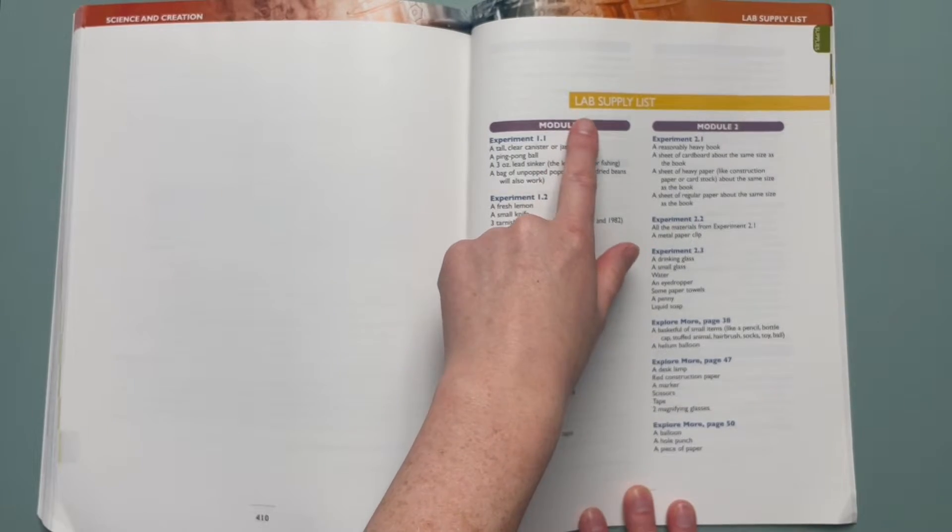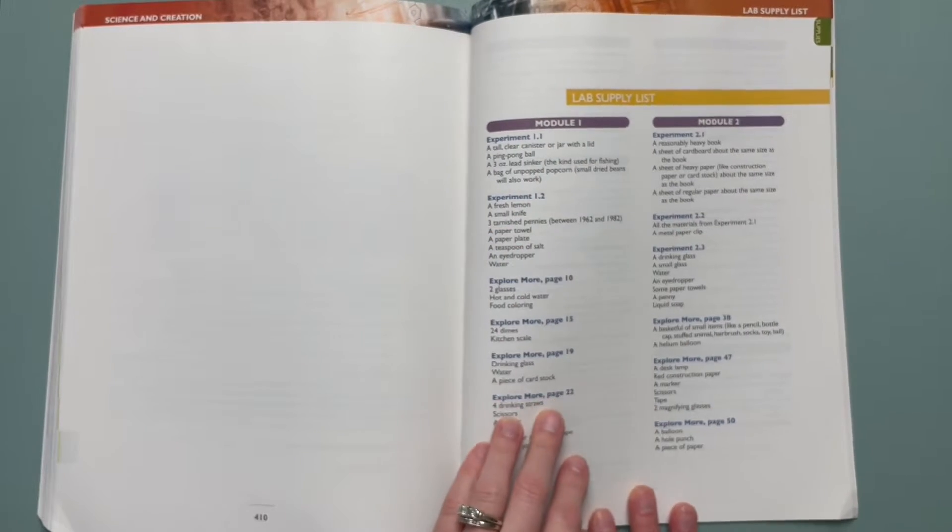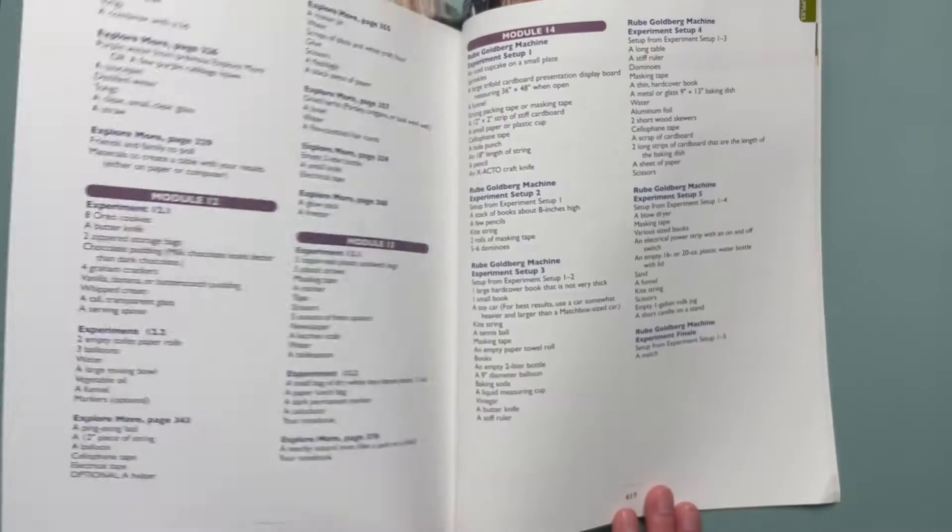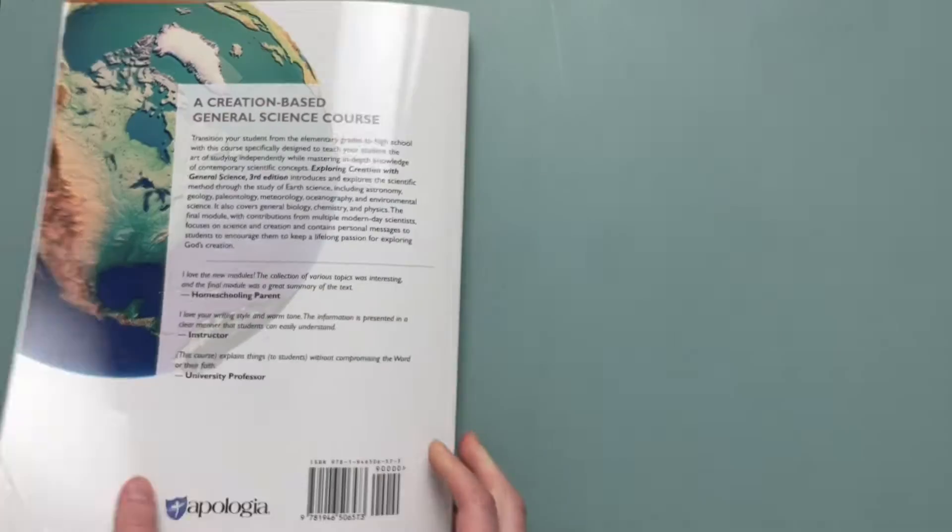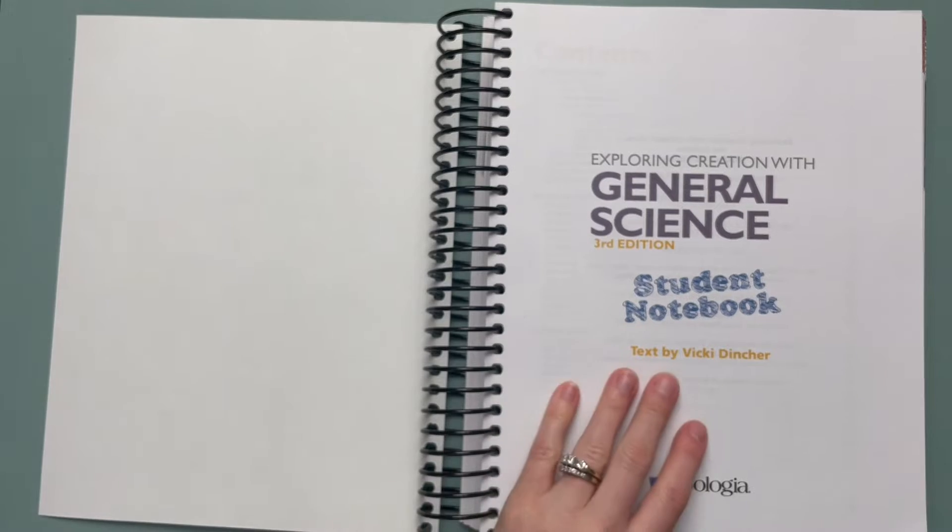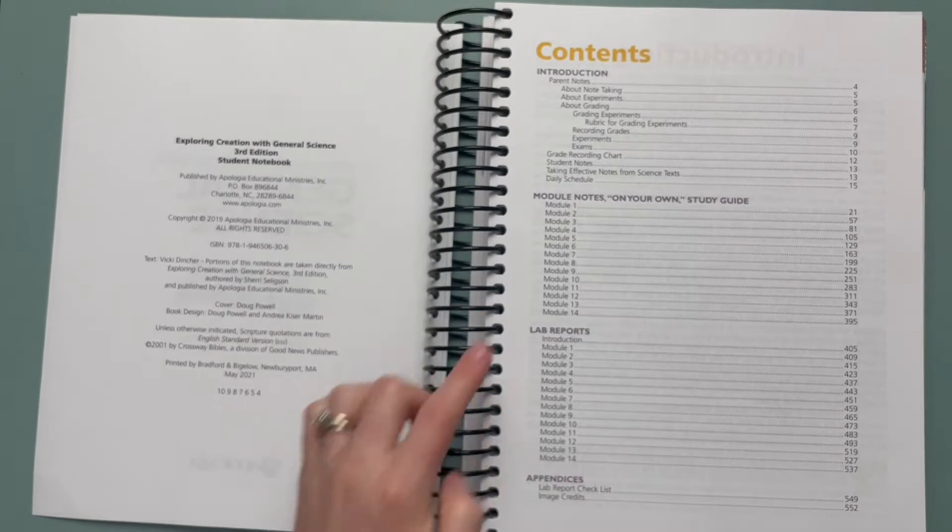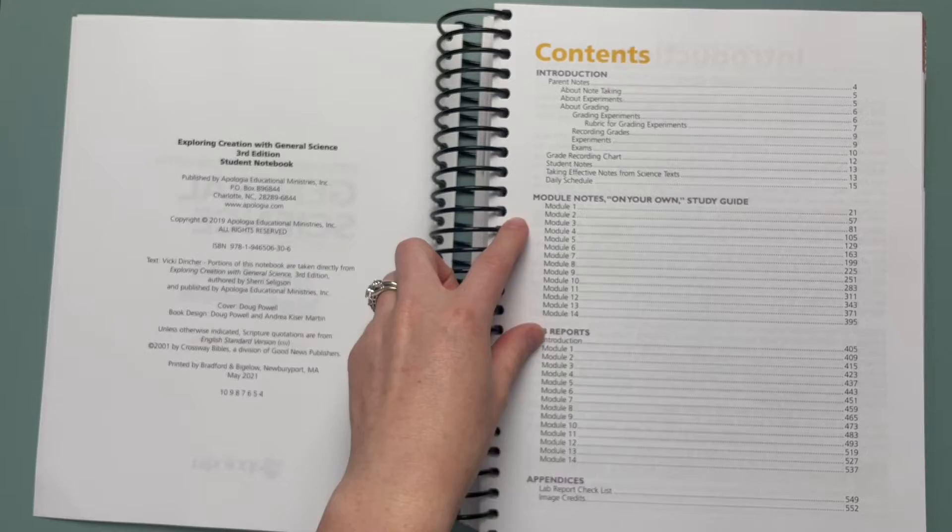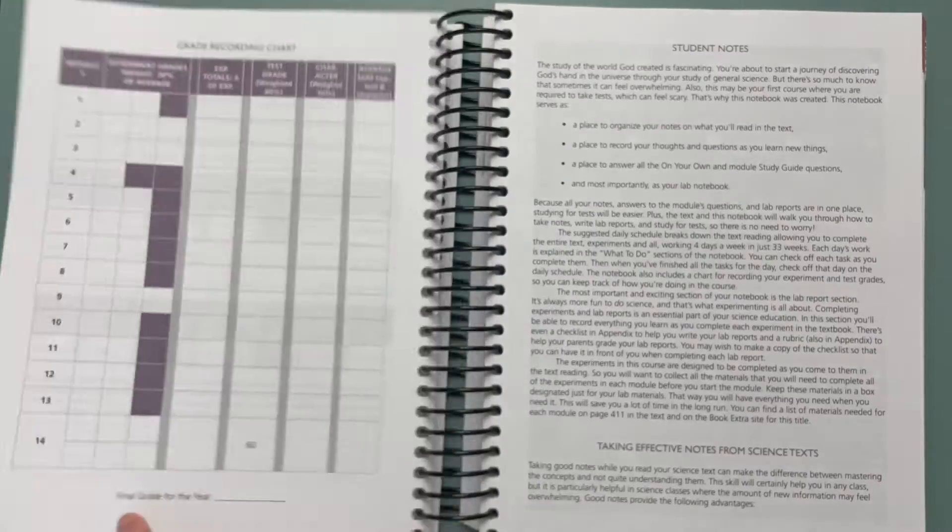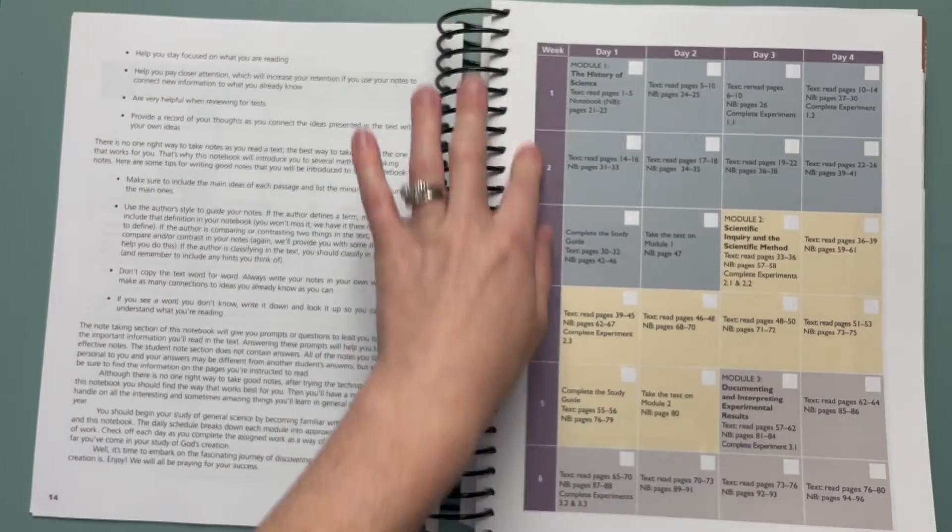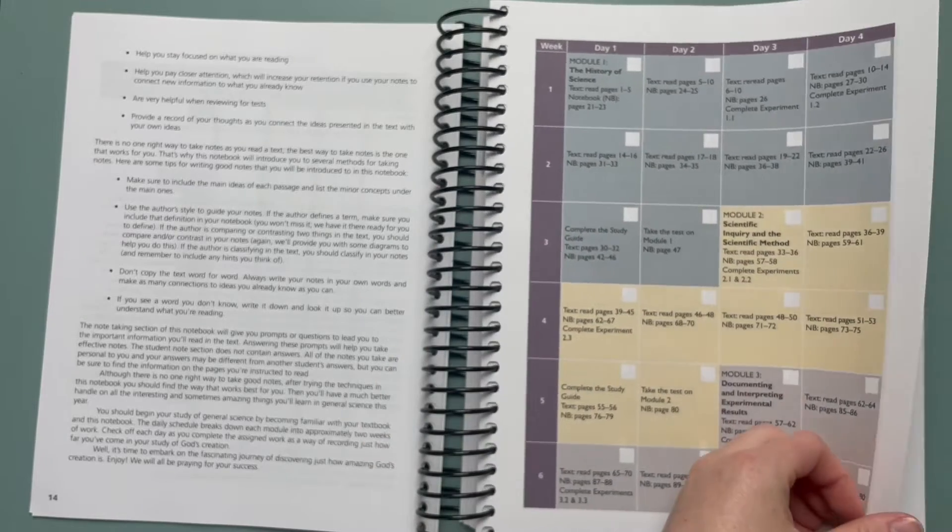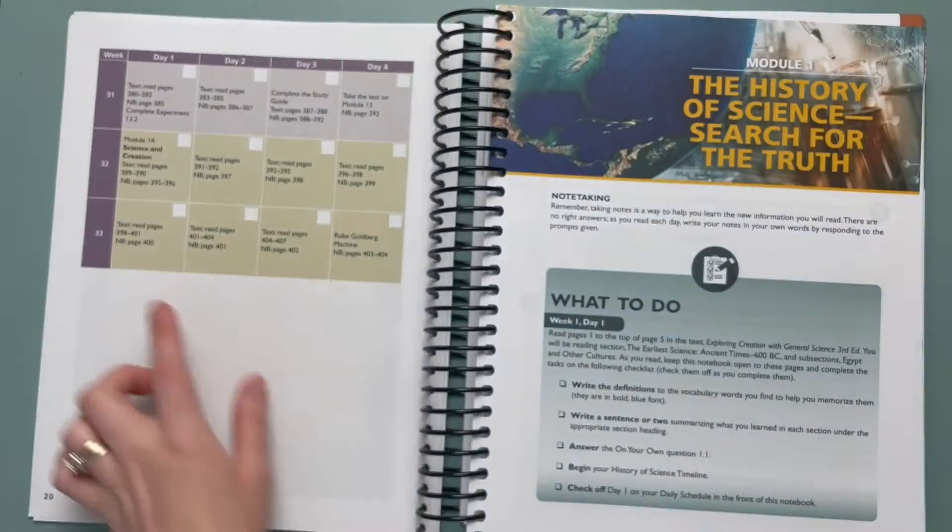All right and at the end you can see a lab supply list here so that's just a good overview of all the different things you would need to do the different experiments in the different modules and there's your index in the back. A quick look through the workbook, again it's very big and thick so I'm not going to go through all of it. Your breakdown of your modules and your lab reports here. You have your grading rubrics here. Here's your grade recording chart. This is how your schedule is going to be laid out here every week and every day except for four days a week so that gives you an idea that it takes about 33 weeks with four days.